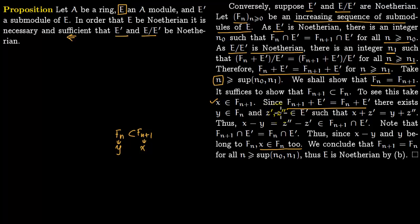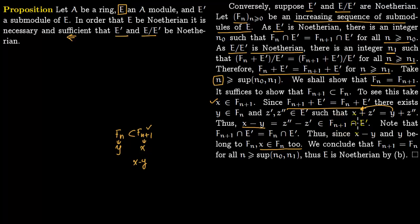So y lies within Fn and therefore also within Fn+1. There exist z prime and z double prime in E prime such that x equals y plus z double prime minus z prime. Rearranging, x minus y equals z double prime minus z prime. Since both x and y lie within Fn+1, x minus y also lies within Fn+1; on the other hand z prime and z double prime lie within E prime, so x minus y lies within Fn+1 intersection E prime.